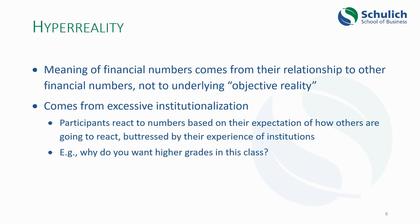Vollmer's argument is that participants in any field that uses financial numbers react to those numbers based not just on what they think the numbers mean, but on their expectation of how other people are going to react to them. You know that analysts are going to jump on your financial accounting numbers if you release them as a CFO, so you are very careful about the way you construct those numbers. Another way to bring this home: why do you want higher grades in this accounting class? Not necessarily because you value them, but because you think other people value them — and therefore you have to decide how to behave in relation to the opportunities provided to get a grade.